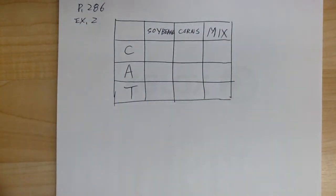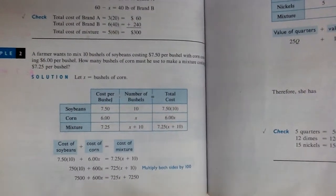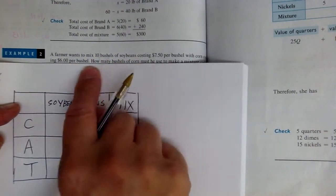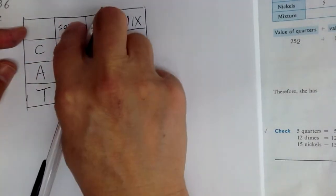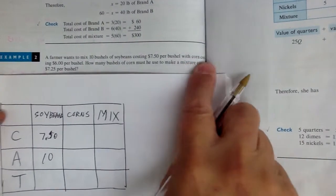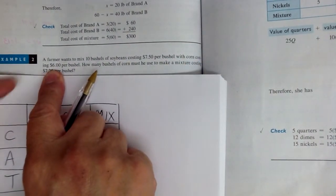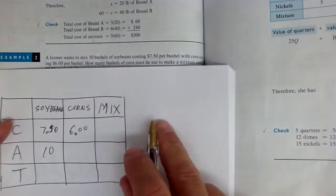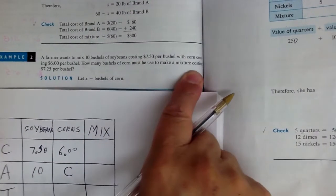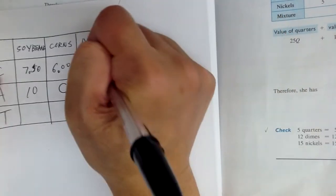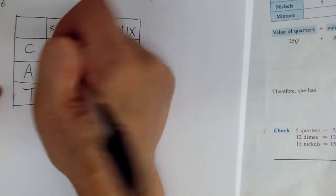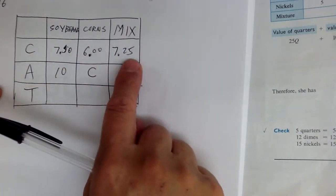Read and fill in the blanks item by item. The problem says 10 bushels of soybeans costing $7.50 per bushel — so 10 goes in the amount row for soybeans and 7.50 goes in the cost row. Corn costs $6 per bushel; how many bushels of corn is unknown, so use variable C. The mixture costs $7.25 per bushel — remember, the middle number always goes in the mix cost. The high and low numbers go to the sides.